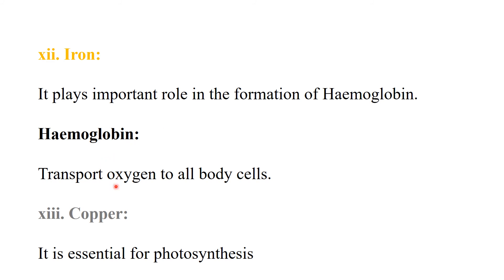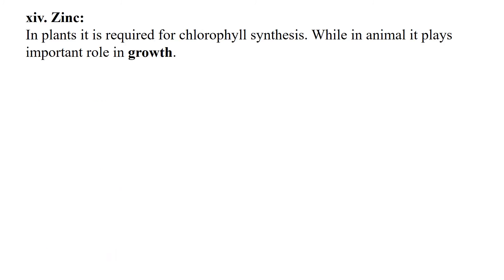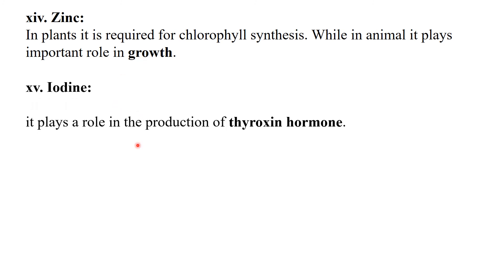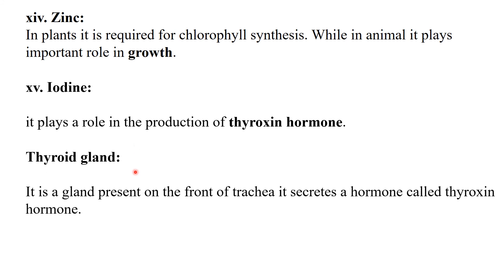Hemoglobin helps in the transport of oxygen to all body cells. Copper is essential for photosynthesis. Zinc: in plants it is required for chlorophyll synthesis, while in animals it plays an important role in growth. Iodine plays a role in the production of thyroxine hormone from the thyroid gland, which is located in our neck. Thyroxine regulates chemicals, calcium, and blood pressure.